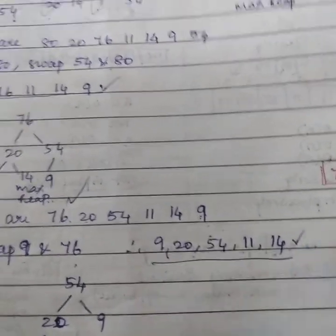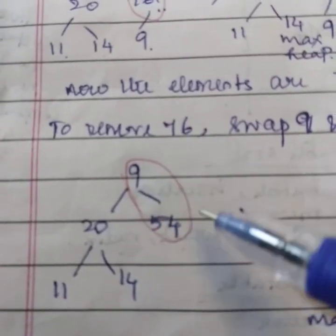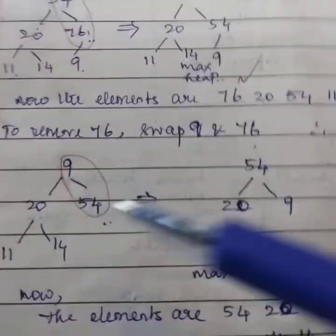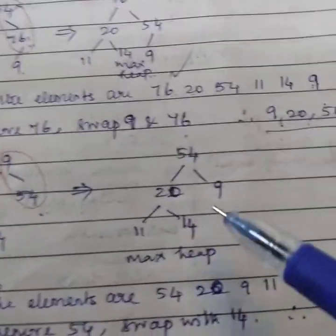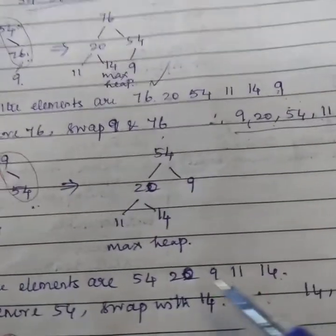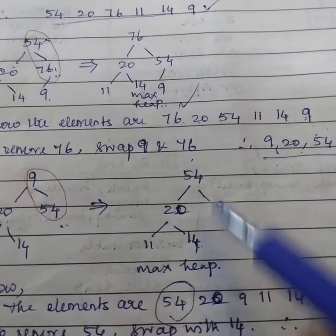For this thing, we need to draw again. Again, need to check the rule, parent-child rule. So interchange. After interchanging, this is the max heap for this element. Now we need to take out this 54 and keep it apart. For that, we need to interchange the last element, 14 and 54.